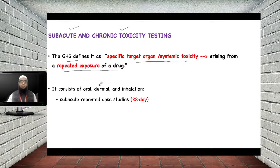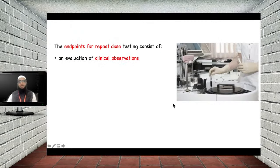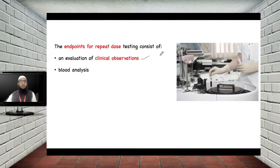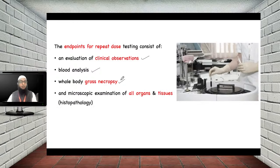Sub-acute studies are performed for 28 days; sub-chronic or repeated dose studies for at least 90 days in rodents. Endpoints include clinical observations, blood sample biochemical parameters, whole-body gross necropsy where the animals are sacrificed, and microscopic histopathological examination of all organs and tissues.